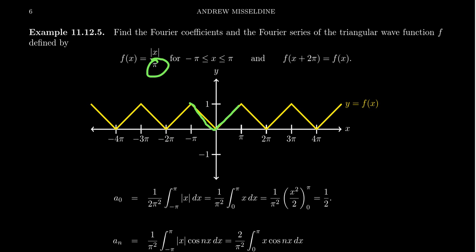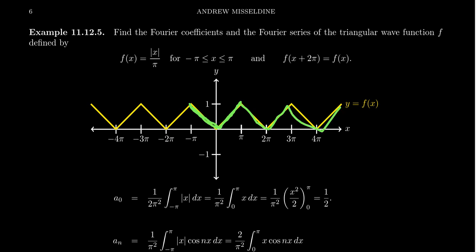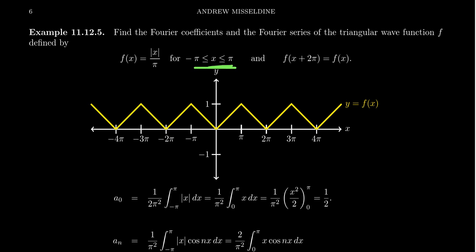Changing the function by a constant multiple only changes the Fourier series by a constant multiple as well. If you take any continuous function like the absolute value function, you can repeat it to make it periodic, and that periodic function will have a Fourier series representation that perfectly matches it. Because of the function's symmetry with respect to the y-axis — since the original function is even — there are no jump discontinuities. The function is continuous; its derivative is piecewise continuous, so by the Fourier convergence theorem the Fourier series will be exactly equal to the triangular wave, sometimes called the sawtooth function.